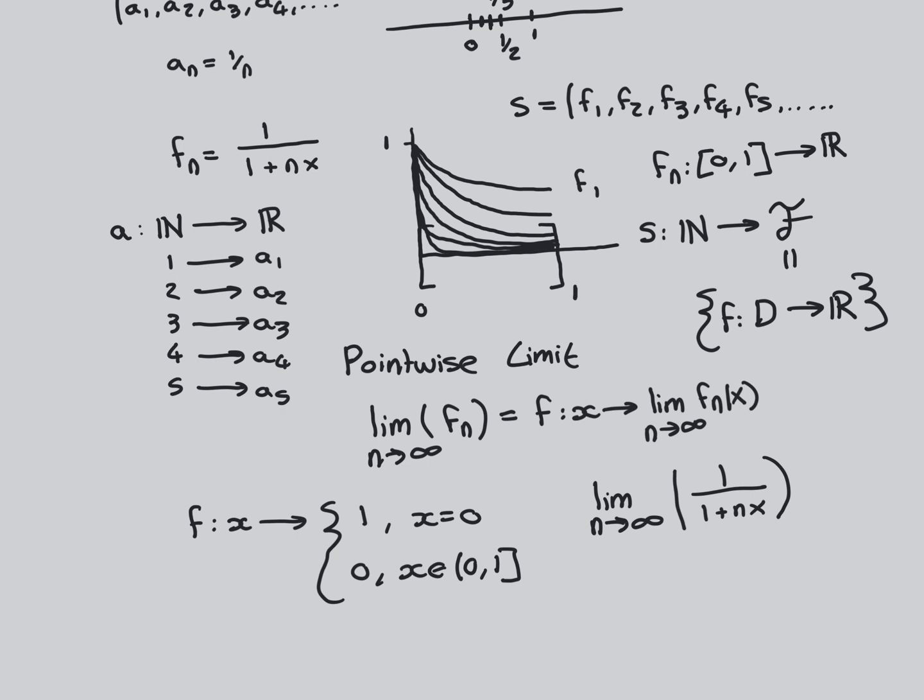You can see why it's called a pointwise limit: we look at each individual point in the domain and ask whether the sequence of functions evaluated at that point converges to something. It's not a holistic notion of convergence — you're splitting the function down point by point rather than looking at a more global concept.